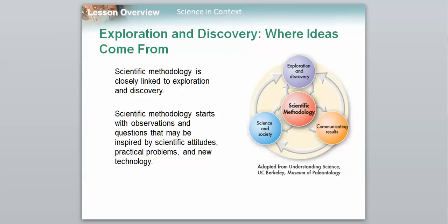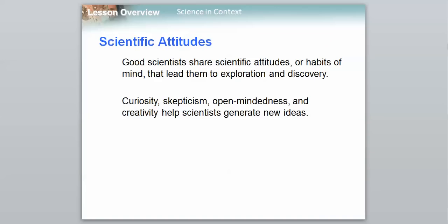So we're talking about the scientific methodology, which is that scientific method we talked about, is related to exploration and discovery, and it starts with observation and questions that may be inspired by scientific attitudes, practical problems, and new technology. That's the heart. Remember, the scientific methodology is the heart, but there are other portions of the body of science that are important. We're going to take a look at attitudes first, then practical problems, and then new technology. So now, scientific attitudes. Good scientists share scientific attitudes or habits of mind that lead them to exploration and discovery. So curiosity, skepticism, open-mindedness, and creativity help us generate those new ideas.